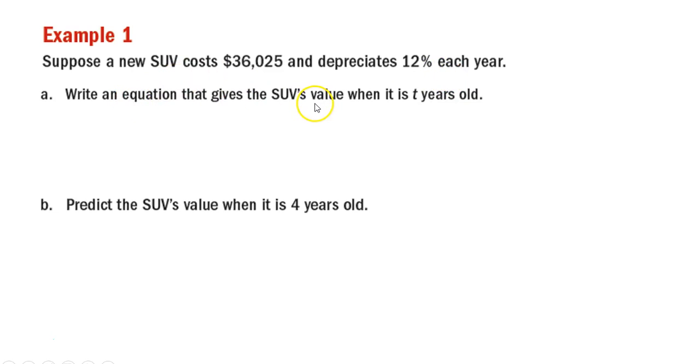We're going to write an equation that gives the SUV's value when it is t years old. This is an exponential situation because the value is decreasing by a percentage, not the same amount every year. It's a certain percentage of whatever the value is. That function is going to look like this: f of t equals $36,025 times 0.88 to the t power.